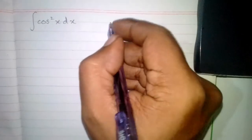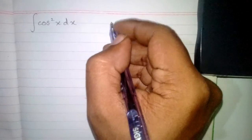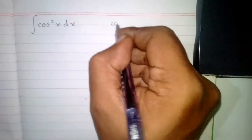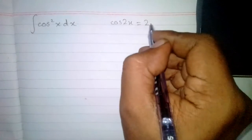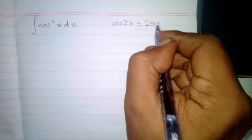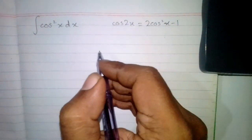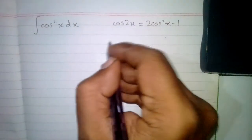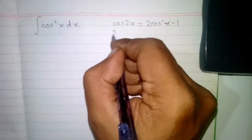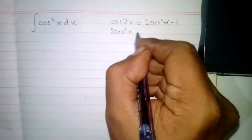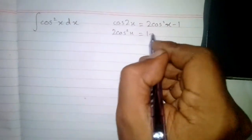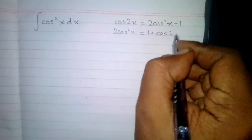In this video we will find the integral of cos square x. First of all, we know that cos 2x is equal to 2 cos square x minus 1. We can rearrange this formula so that 2 cos square x is equal to 1 plus cos 2x.